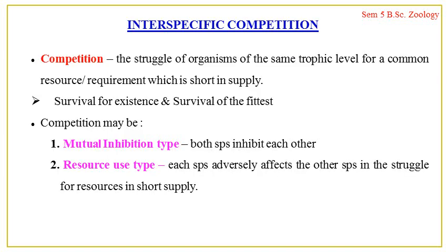The second negative inter-specific population interaction is competition. Competition can be defined as the interaction between two organisms that compete for the same limited resource — specifically for the same resource or requirement that is in short supply or limited in the ecosystem. The competing species usually belong to the same trophic level, which is why their requirements are the same. Competition can be of different types.